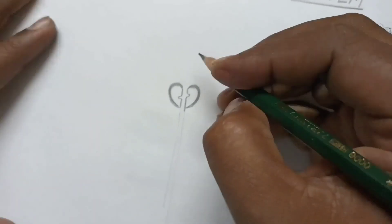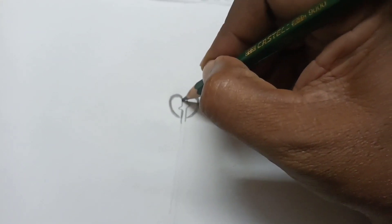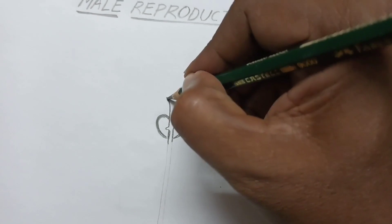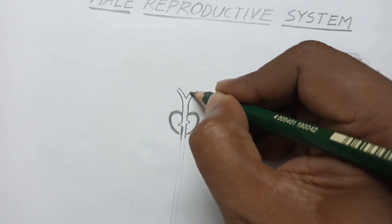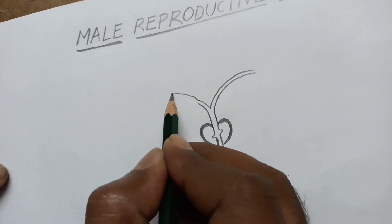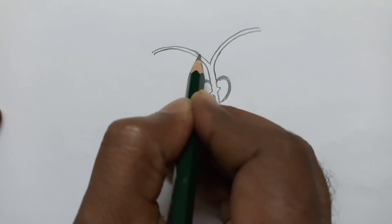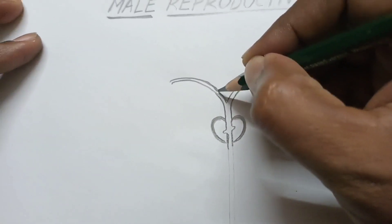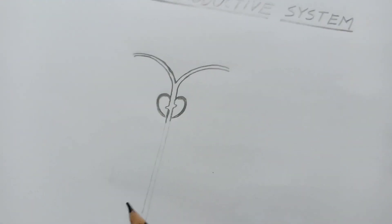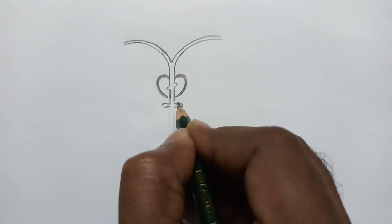Now you draw like this — divide these two tubes like this. These are Cowper's gland.